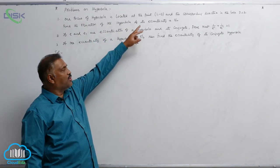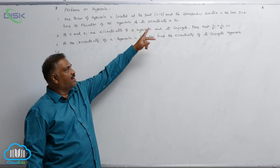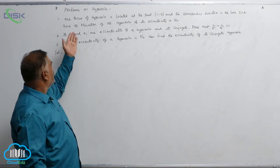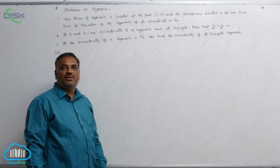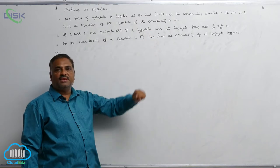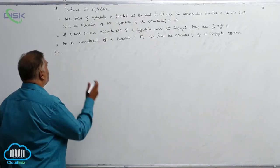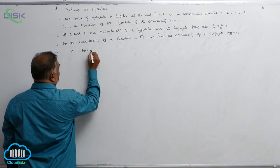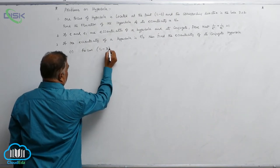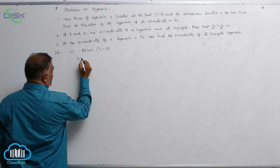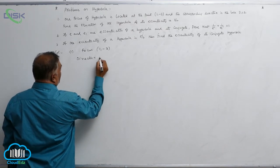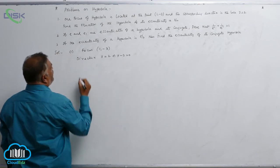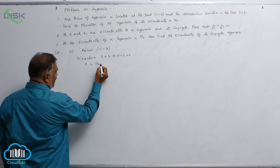One focus of a hyperbola is located at the point (1, -3), and the corresponding directrix is y = 2. We need to find the equation of the hyperbola whose eccentricity is 3/2. The focus is given by (1, -3), the directrix is y = 2 (or y - 2 = 0), and the eccentricity e = 3/2.